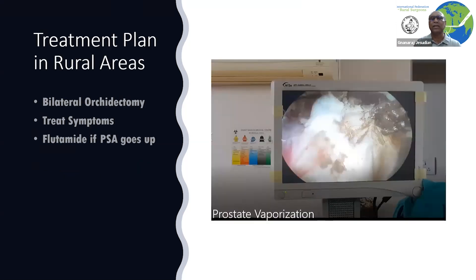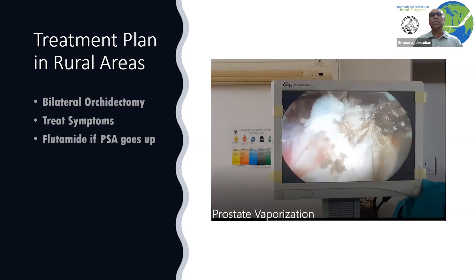What do we do in rural areas? The treatment plan is fairly simple. You perform bilateral orchidectomy, which is an easy procedure — we have another video which shows that. If there is any obstruction following this, we will show a video of vaporization for channel TURP. Then follow with PSA measurements, and if it goes up, you can use flutamide to treat. Now we are going to watch a video showing how we do a channel TURP in a patient who presented with acute painful retention and also has a diagnosis of carcinoma of the prostate.